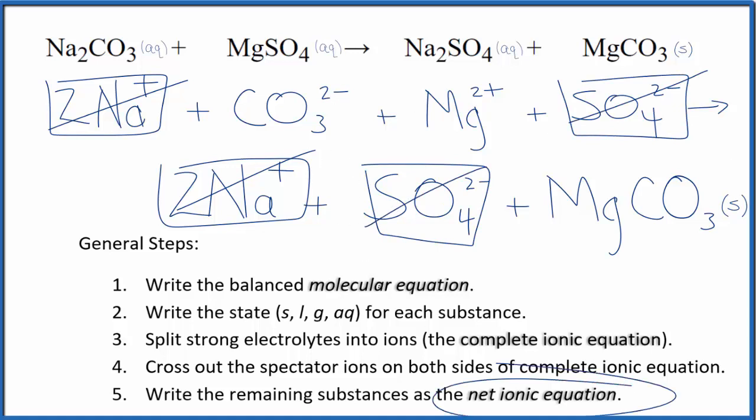This is the net ionic equation for Na2CO3 plus MgSO4. I'll clean this up and write the states. We'll have our net ionic equation.